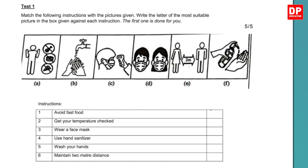The six instructions are: 1. Avoid fast food. 2. Get your temperature checked. 3. Wear a face mask. 4. Use hand sanitizer. 5. Wash your hands. 6. Maintain 2 meter distance.